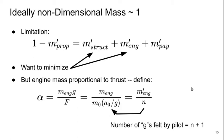Now ideally, we'd like that non-dimensional mass to be about 1, but of course we can't actually achieve that in practice. We have this limitation that 1 minus M'prop must be M'structure plus M'engine plus M'payload. What we want to minimize is the structural and engine masses.